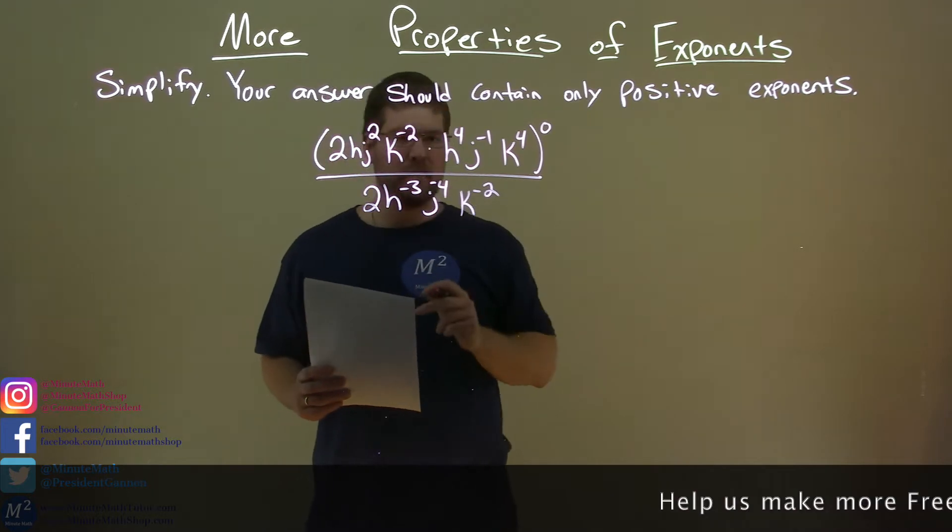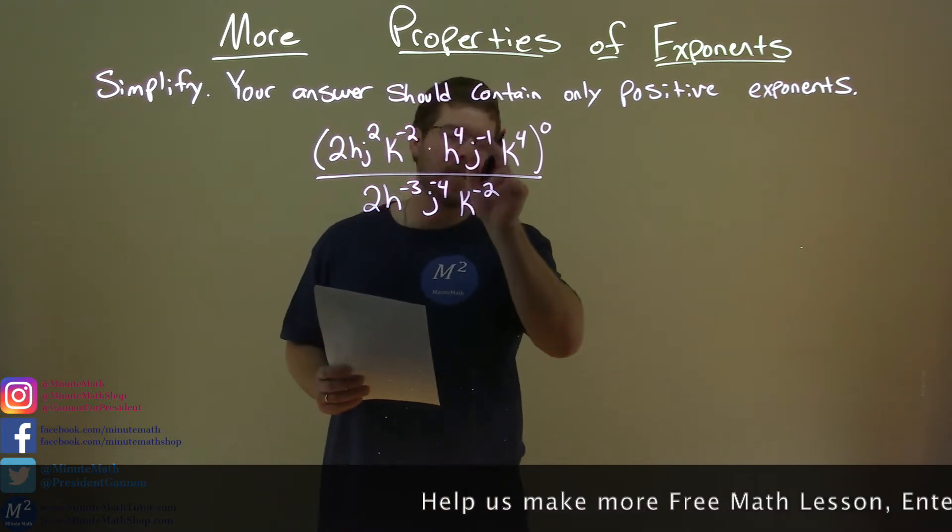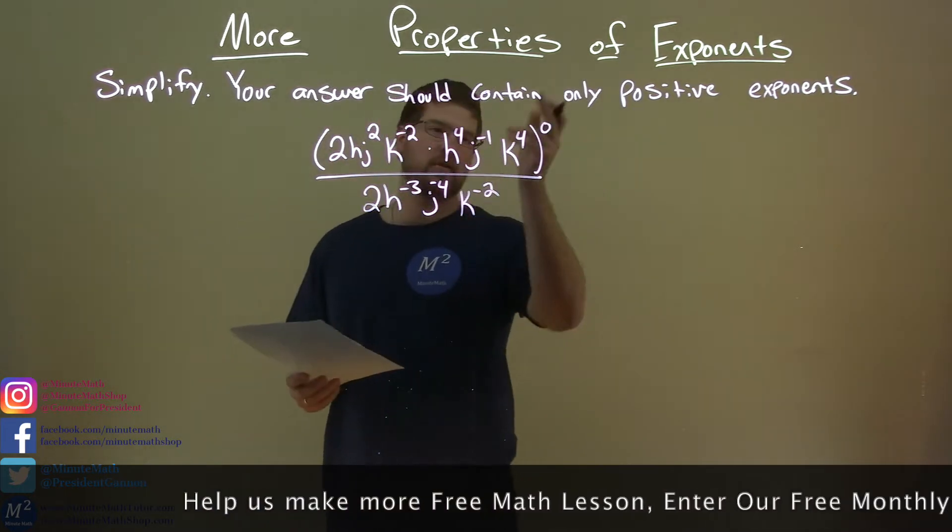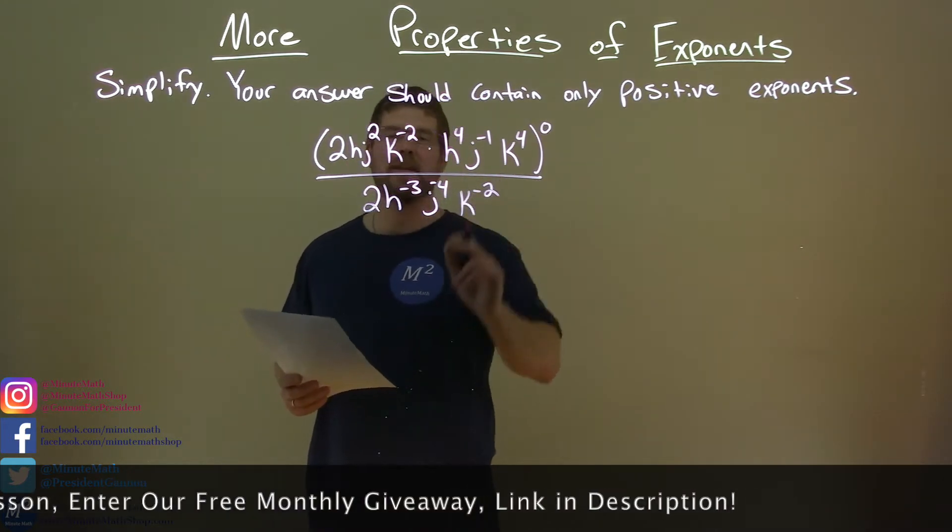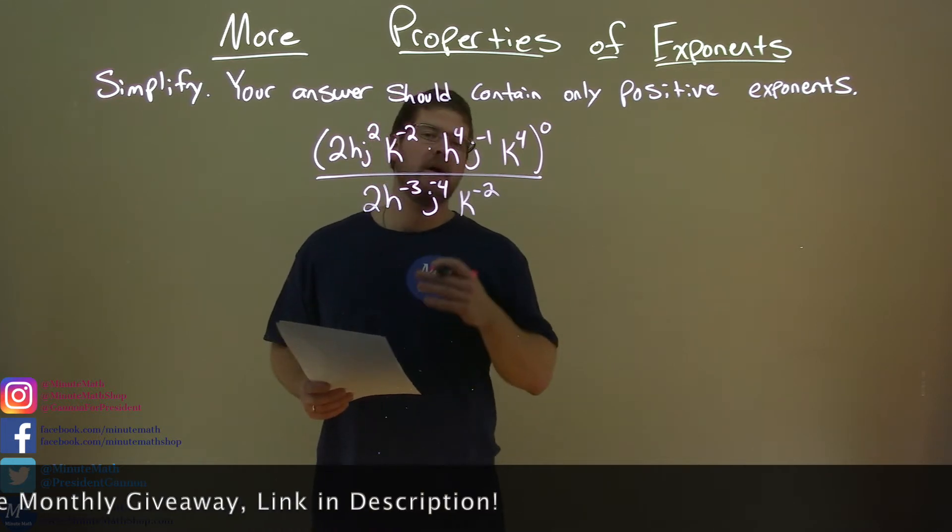2h j squared k to the negative 2 times h to the 4th, j to the negative 1, k to the 4th, all to the 0 power, divided by 2h to the negative 3rd, j to the negative 4th, k to the negative 2nd power. What a doozy.